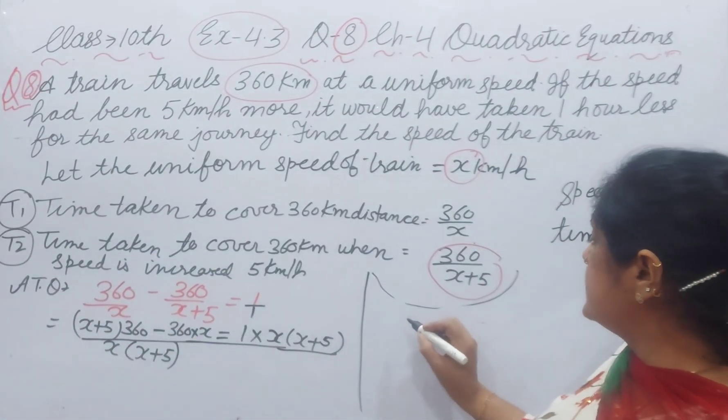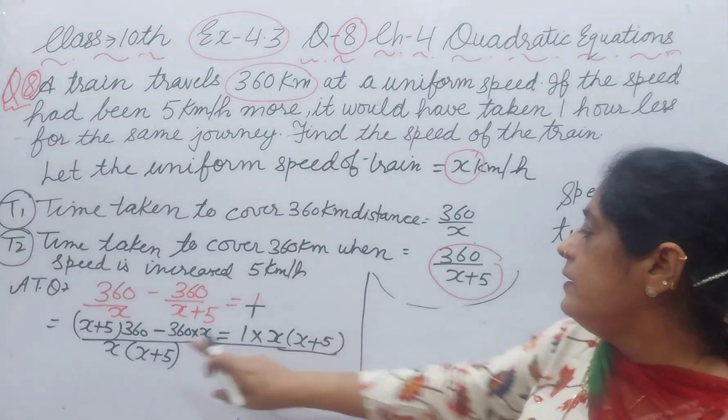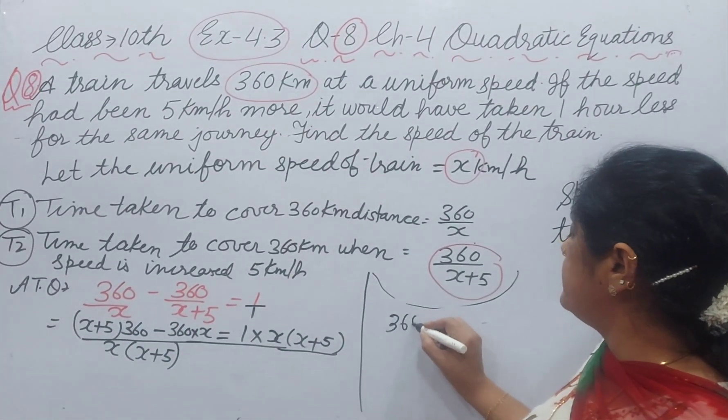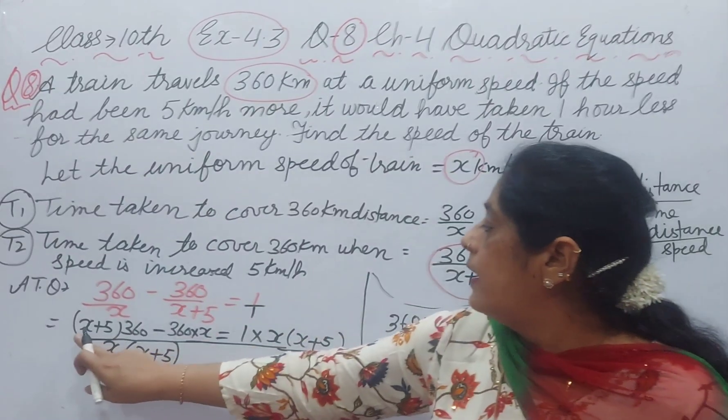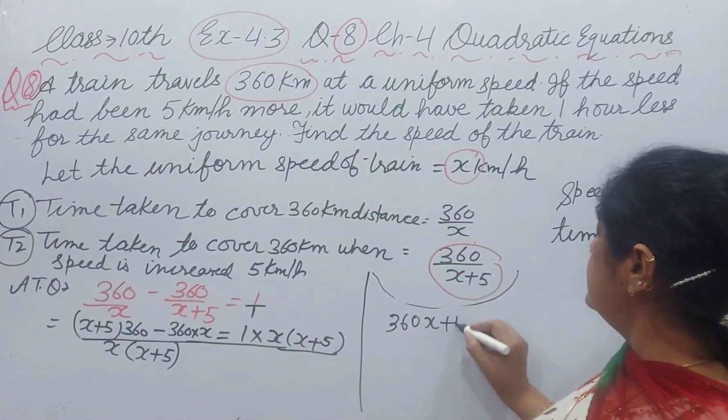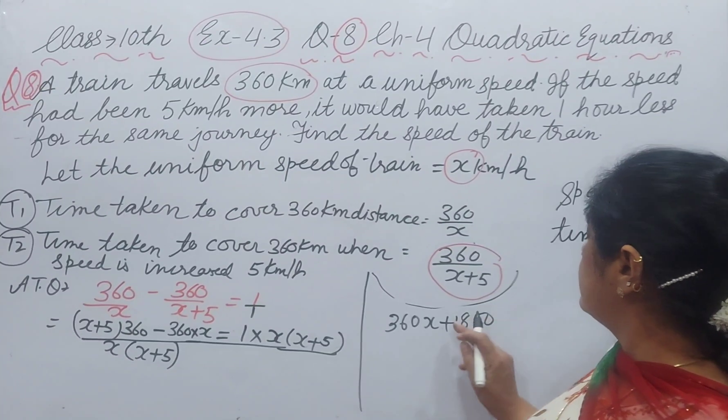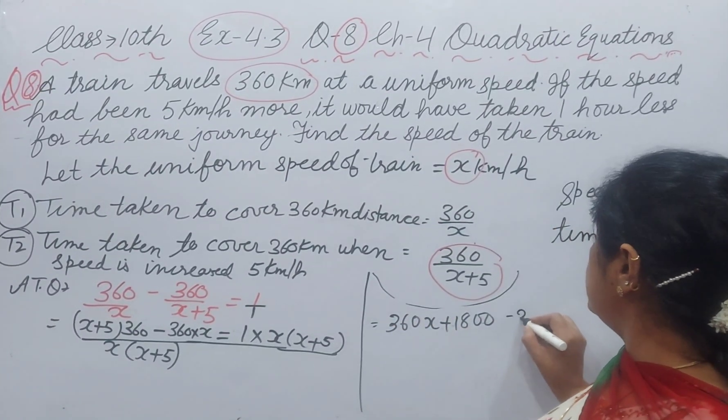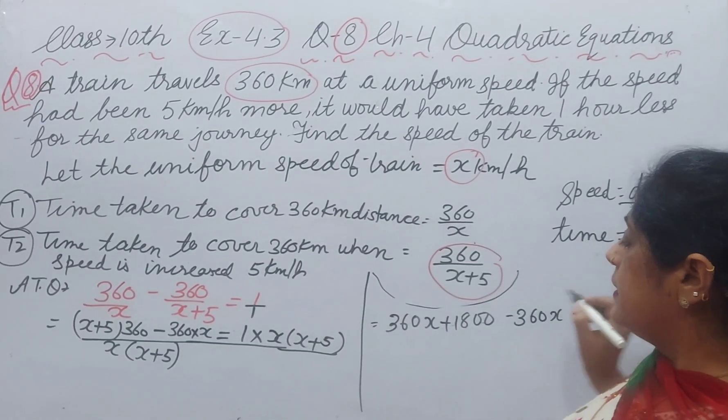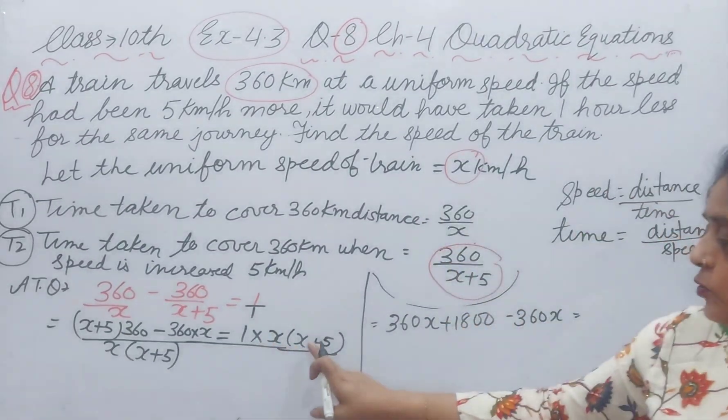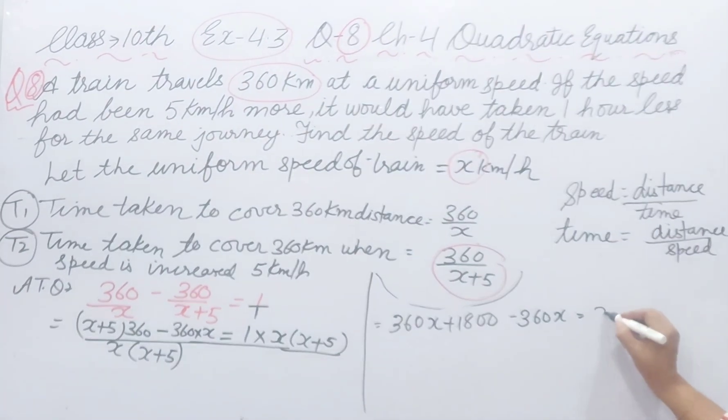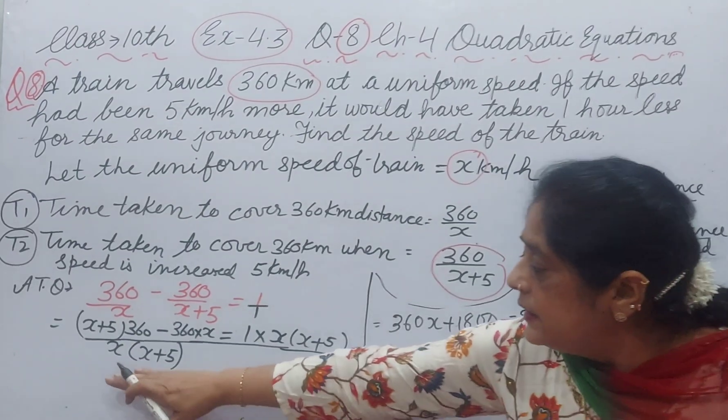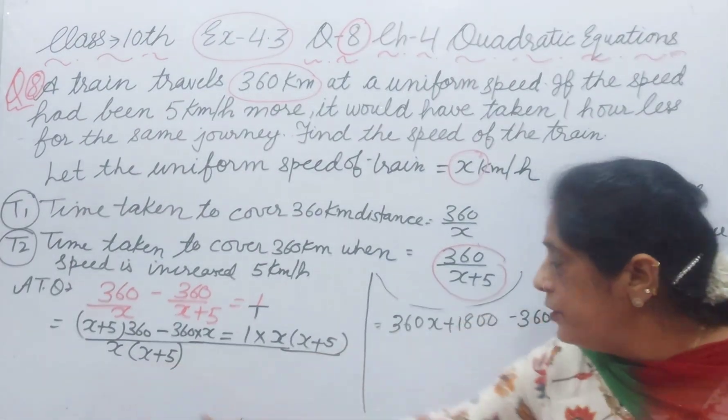Plus 5 into 360, it will be x multiply 360, 360x. 5 multiply 360, 1800 minus 360x. And x into x plus 5, x square plus 5x. And this LCM will be removed.